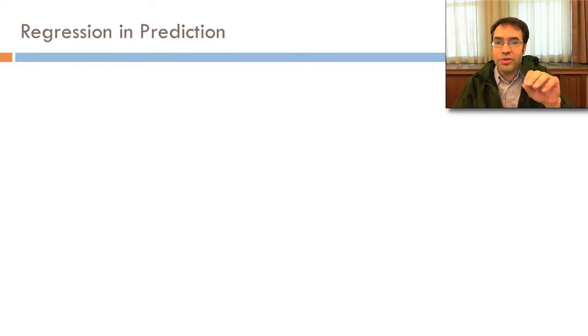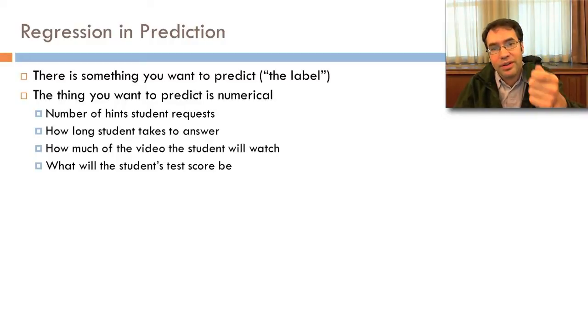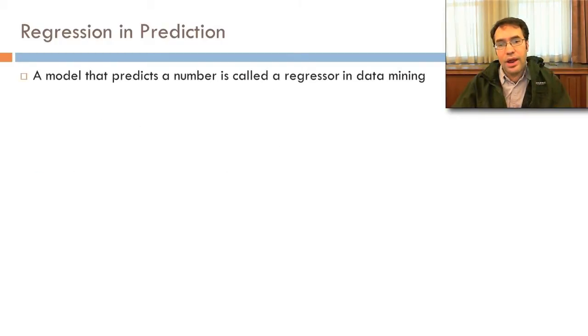What I'm going to talk about specifically in this lecture is regression in prediction. In regression, there's something you want to predict, the label. And that thing you want to predict, that something, is numerical. Maybe it's the number of students' requests. Maybe it's how long the student takes to answer. Maybe it's how much of the video the student will watch. Maybe it's what the student's test score will be. In prediction, a model that predicts a number is called a regressor in data mining. The overall task is called regression.